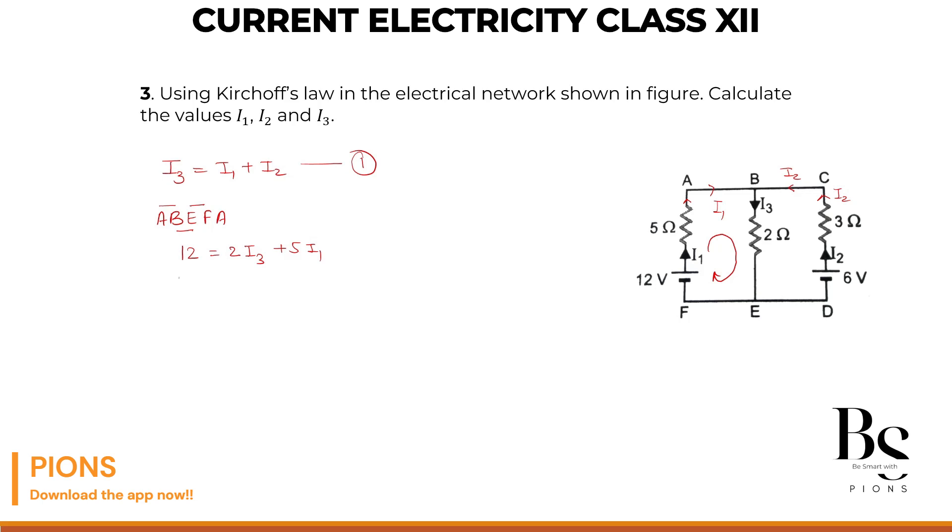Now what's I3? From equation 1, I3 is nothing but I1 plus I2. So this will give us 2I1 plus 2I2 plus 5I1. This will give us 2 plus 5, 7I1 plus 2I2, and that equals to 12.